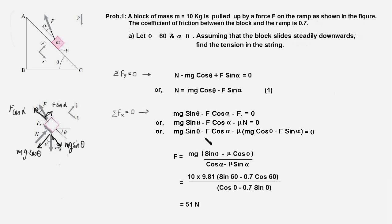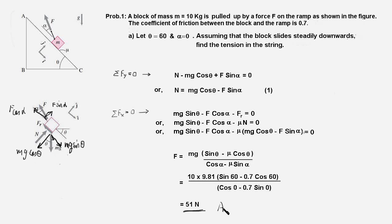Simplifying this equation we get an expression for F on the right-hand side. Putting in θ = 60 degrees and α = 0, F works out to be 51 newtons, and that is our answer for Part A. We now move on to solving Part B of the problem.